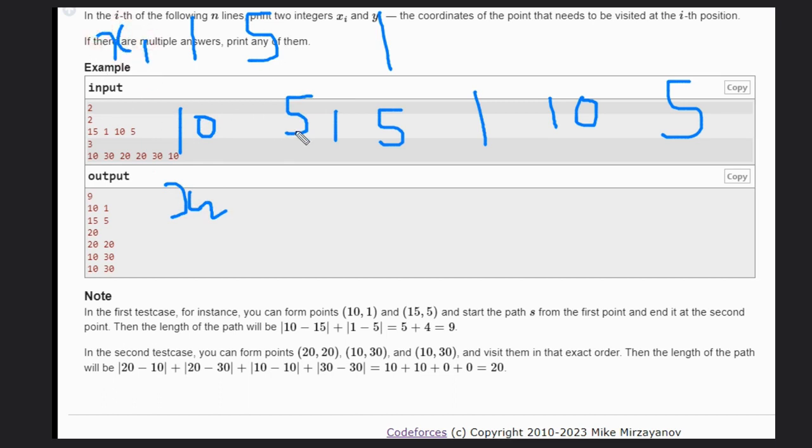We need to determine the summation. We can do 15 minus 10, that will be 5. Basically x1 minus x2. Then we need to do y1 minus y2, that is 1 minus 5, which is 4. If you add them that will be 9. So this is the answer for this.